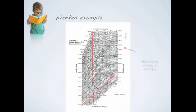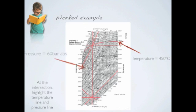Highlight the enthalpy line at 3,296 kilojoules per kg, which is the inlet enthalpy. At the intersection, highlight the temperature line and pressure line.